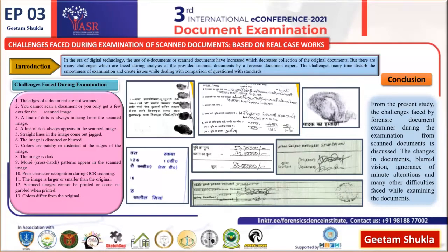Now coming to the next picture. In the next picture, you can see the alignment and direction of the handwriting is disturbed. So the document examiner faces many problems in the class characteristics like line quality, speed, writing instrument, etc.